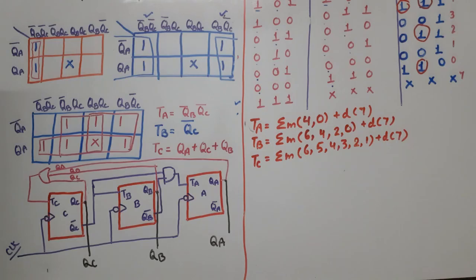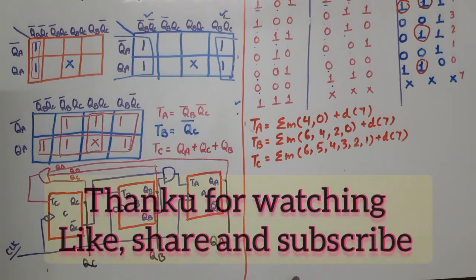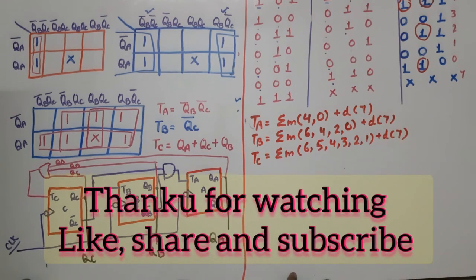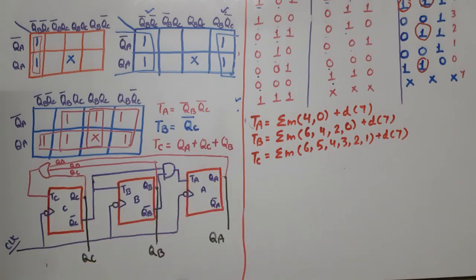This is the complete circuit diagram of the mod 7 synchronous down counter. Thank you so much. If you have any doubt related to this topic, please write in the comment section. Thank you.